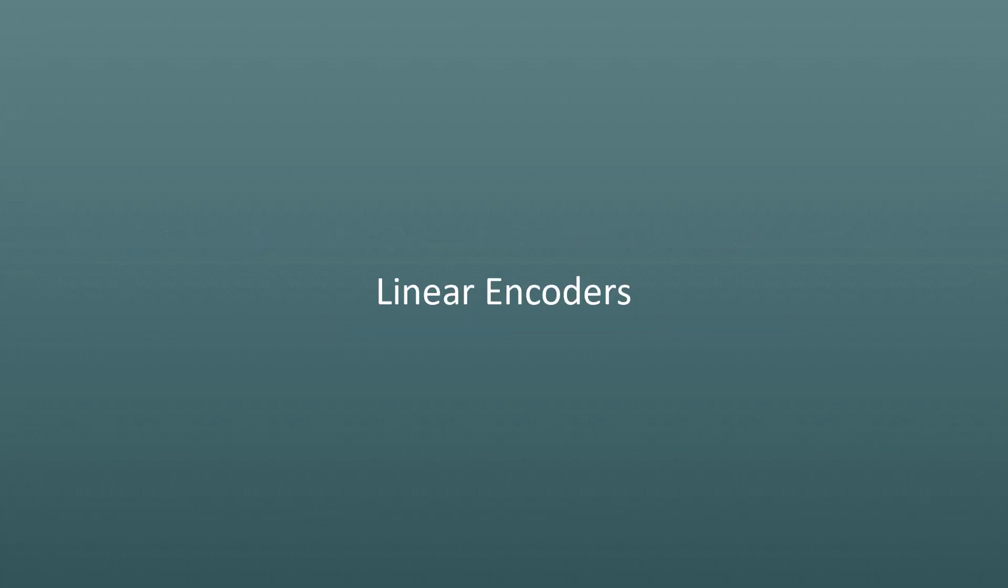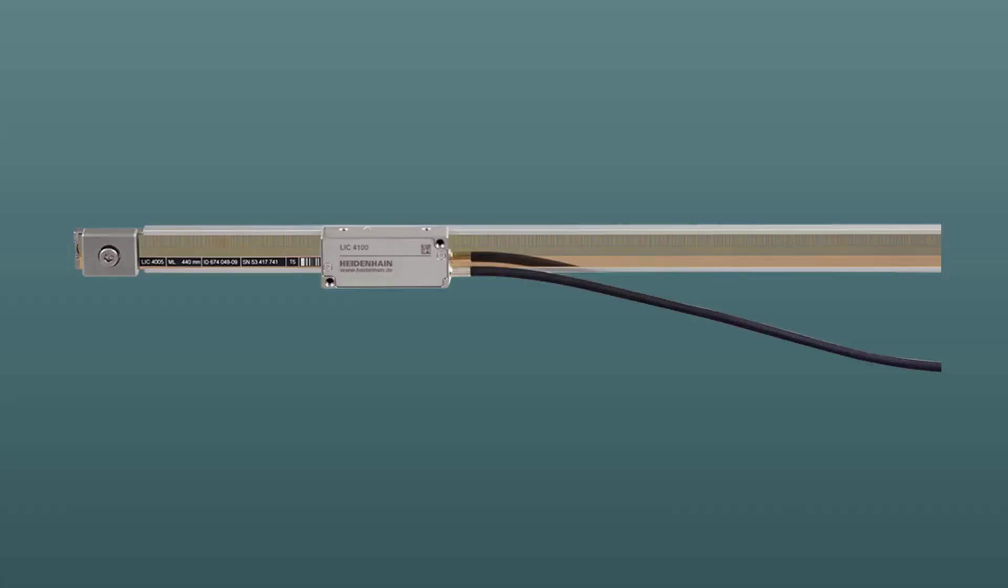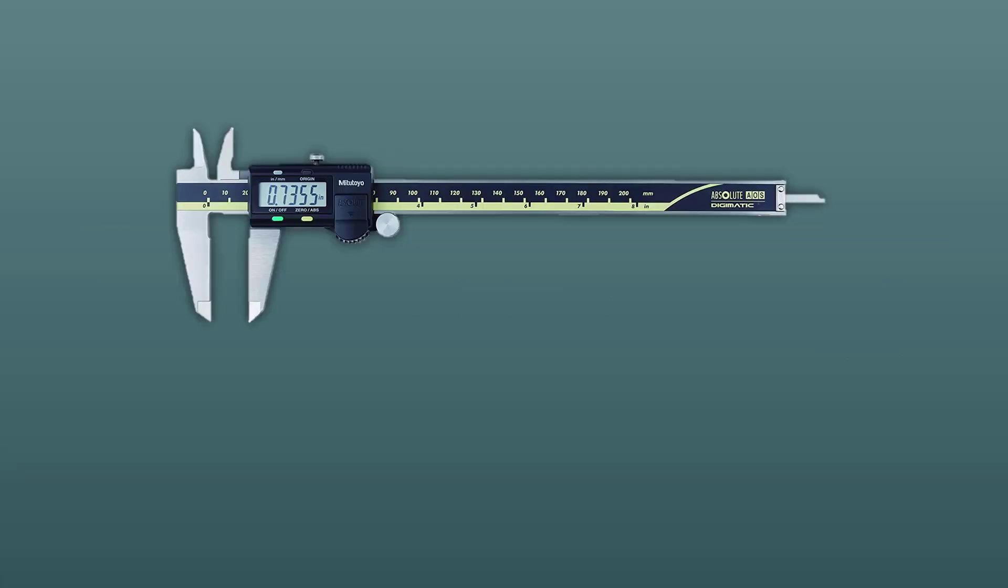So far we have only talked about rotational encoders, but the same approach can be implemented to make linear measurements. In a linear encoder, typically the grating or scale is stationary and the head containing the LED and sensor or magnetic pickup moves. Your calipers, for example, use a linear encoder.